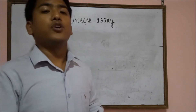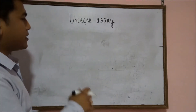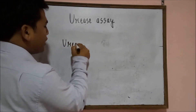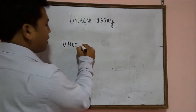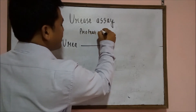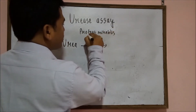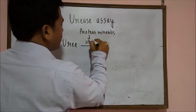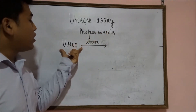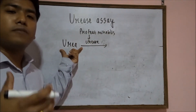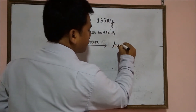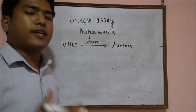There are some basic principles about the urease assay. Whenever an organism is grown on media rich in urea — for example, the bacteria Proteus mirabilis — this bacteria is responsible for the production of the urease enzyme. If Proteus mirabilis is incubated in a urea-rich medium, the urea is converted into ammonium.